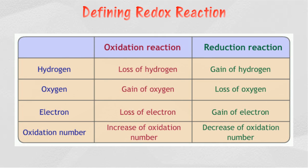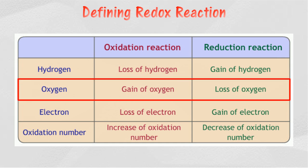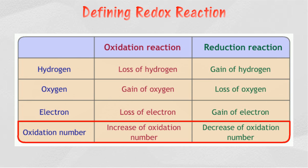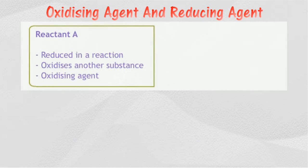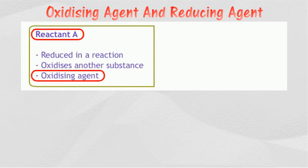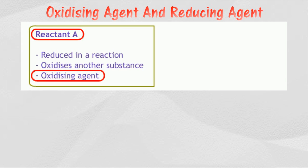Oxidation and reduction can be defined in terms of loss or gain of hydrogen, loss or gain of oxygen, transfer of electrons, and change in oxidation number. An oxidizing agent is a substance that oxidizes another substance, or is reduced in a reaction.